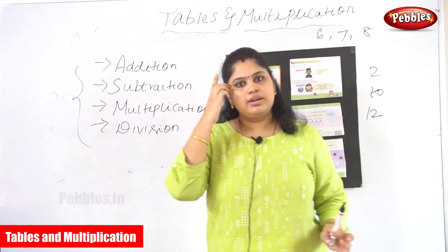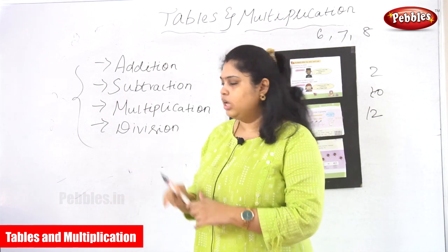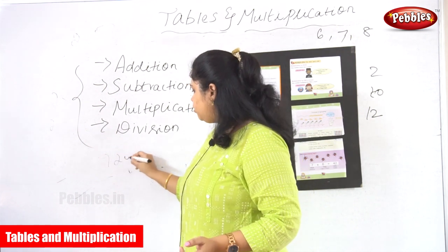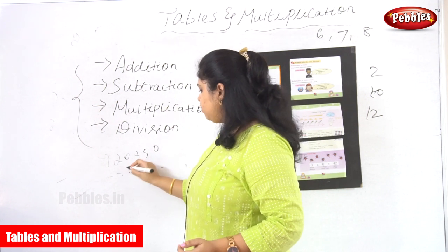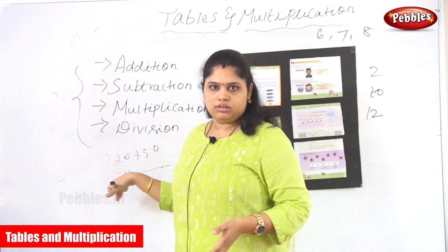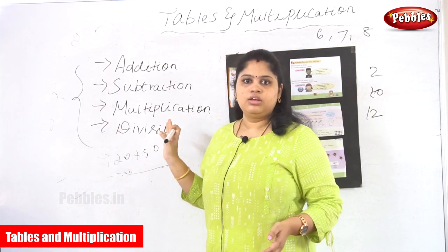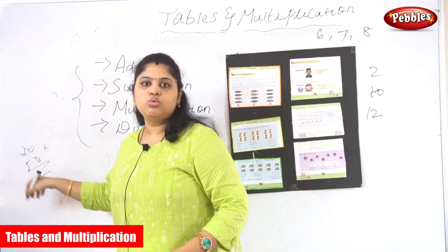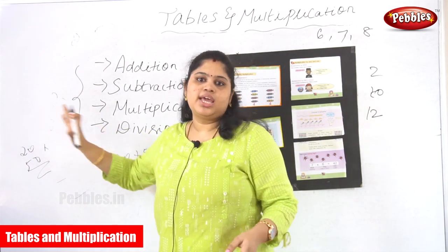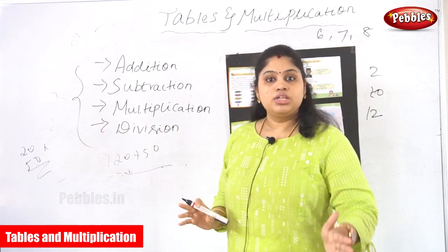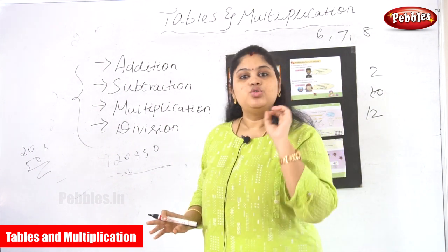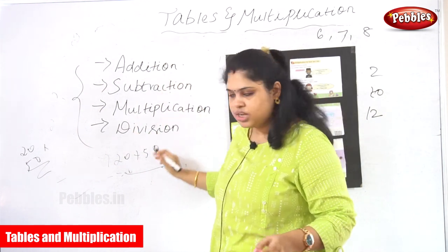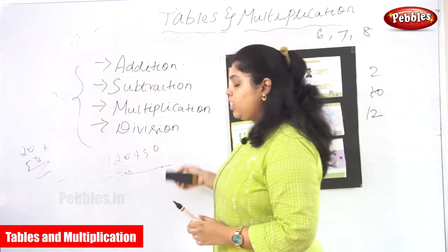Because if you go to higher classes like 8th or 9th standard, the teacher will not keep on explaining every single point. For example, if there is a problem with 20 into 5, the teacher will directly put the exact result. She will not give a detailed explanation at that stage. So at the elementary level itself, you should be very concentrated and well-versed in the four basic operations: addition, subtraction, multiplication, and division.